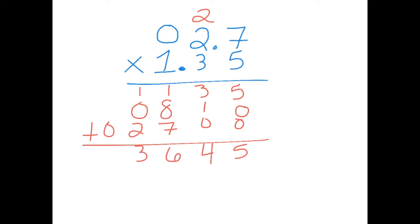Now we have to count how many numbers are behind the decimal where we multiplied. So we have one number behind the decimal here, and two numbers behind the decimal here. So in total, we should have three numbers behind the decimal in our answer. 1, 2, 3. So our answer is 3 and 645 thousandths.